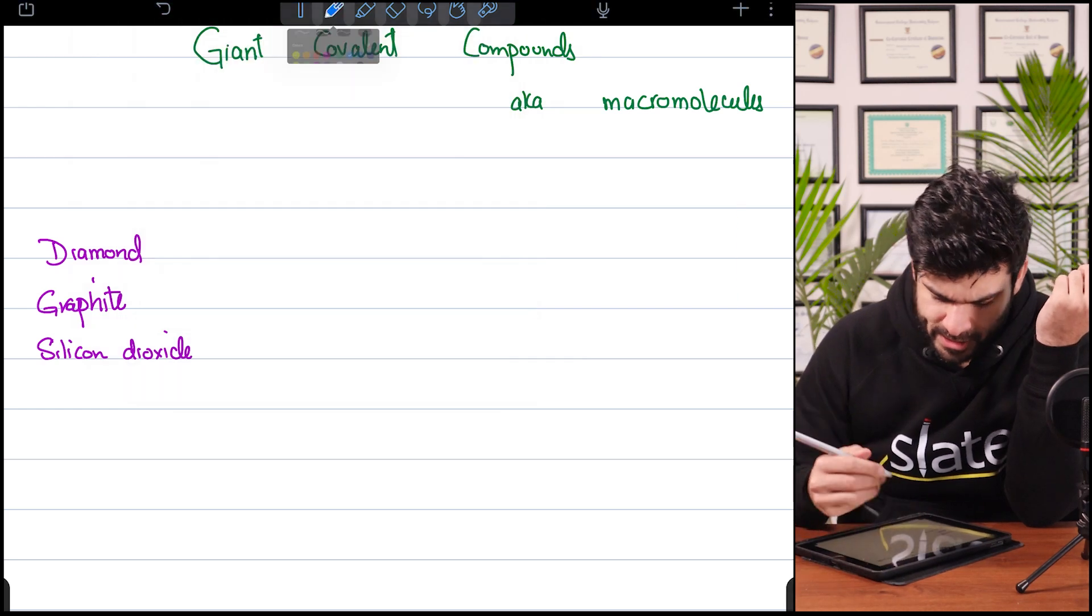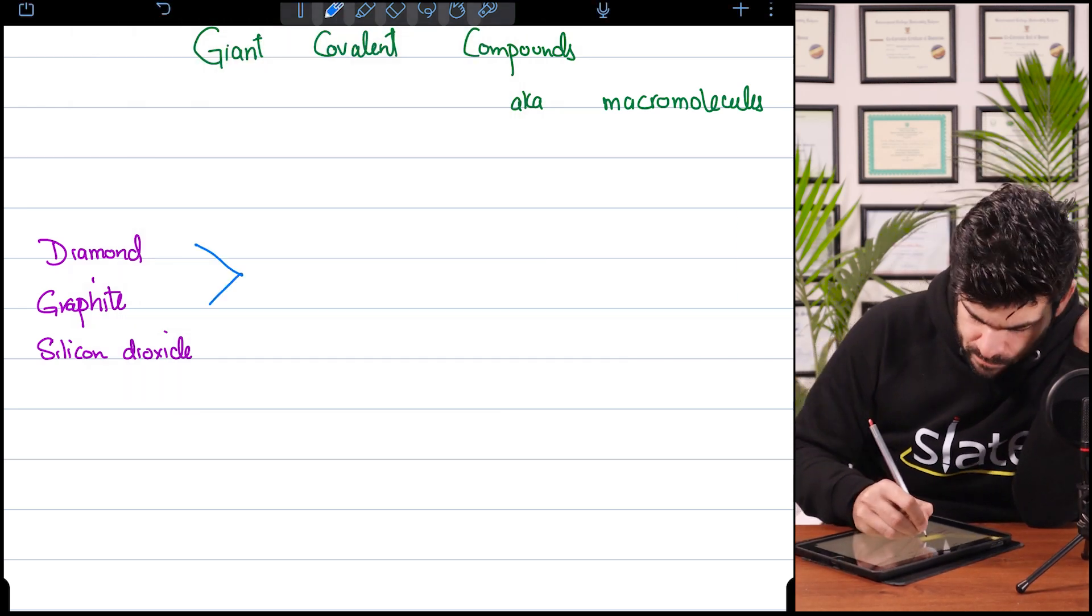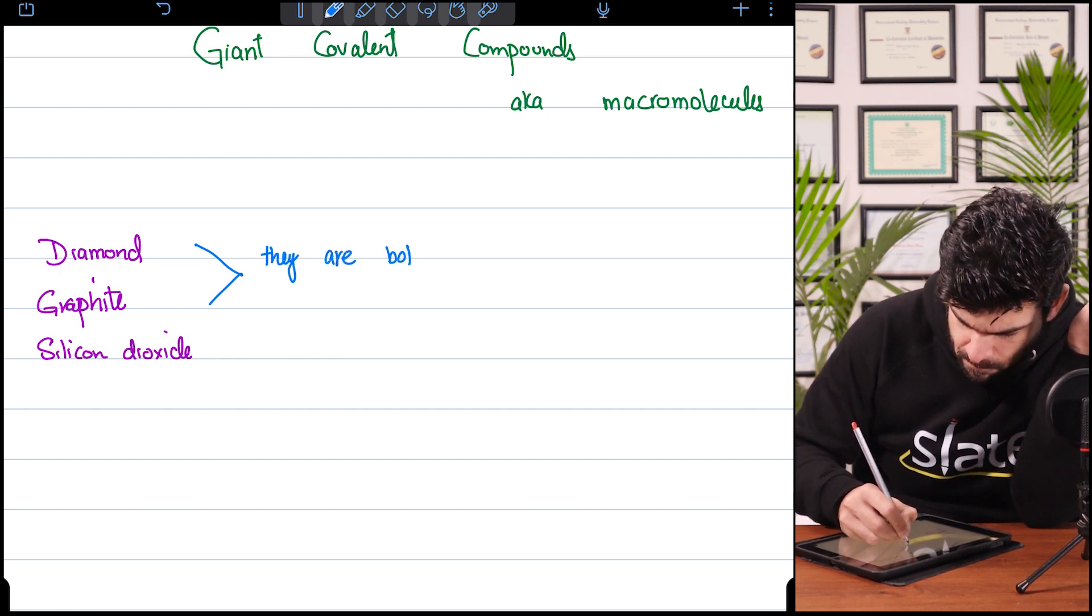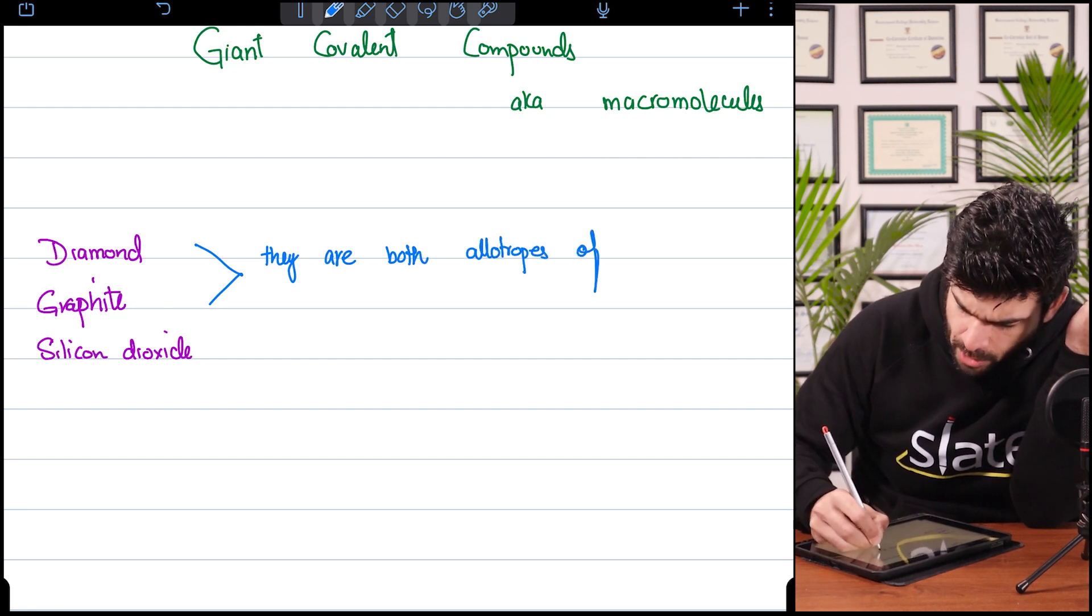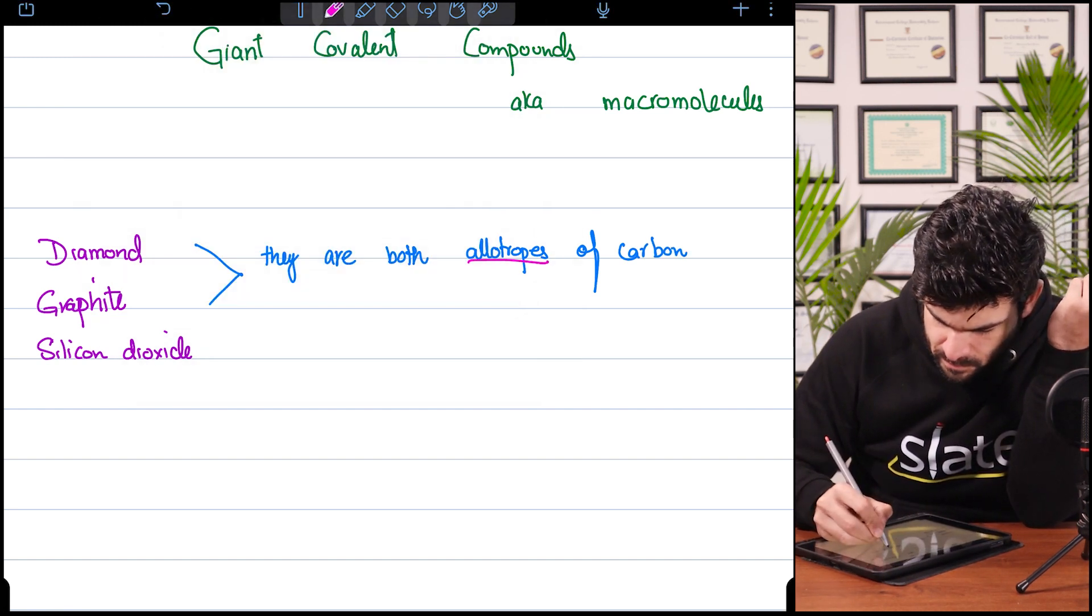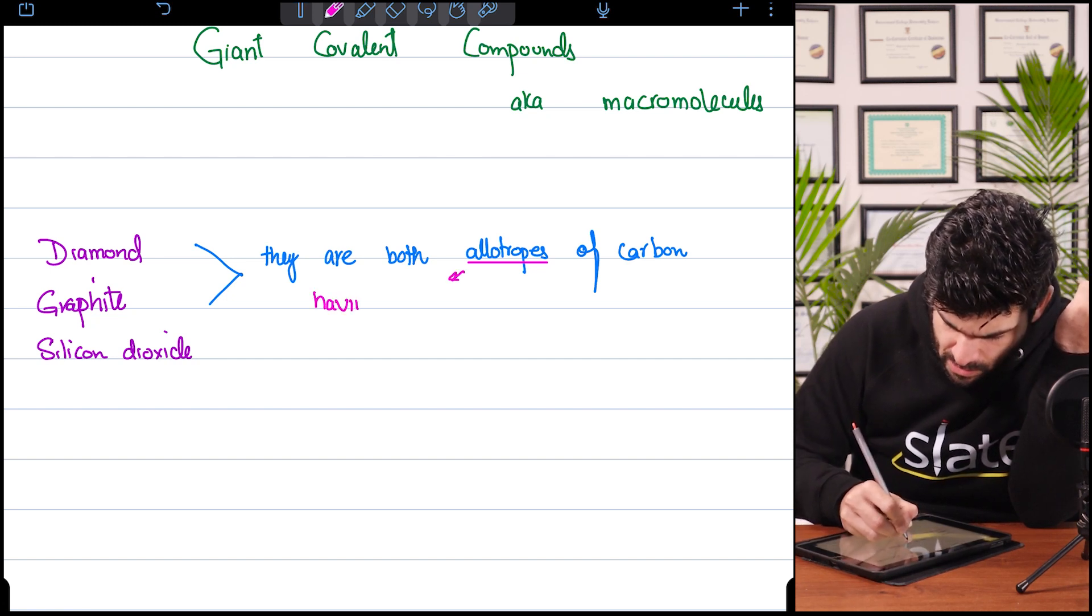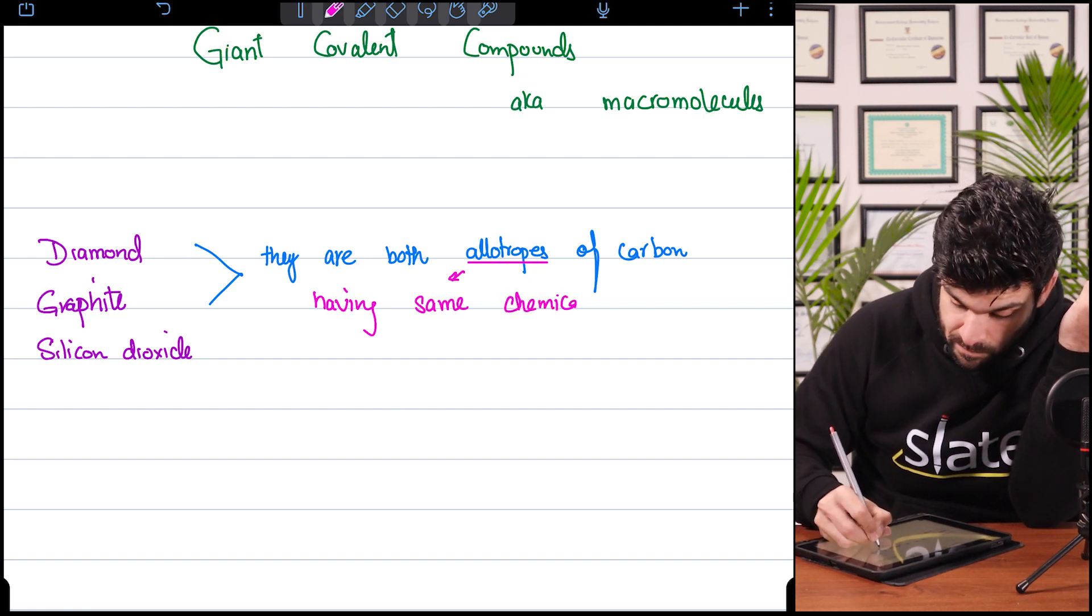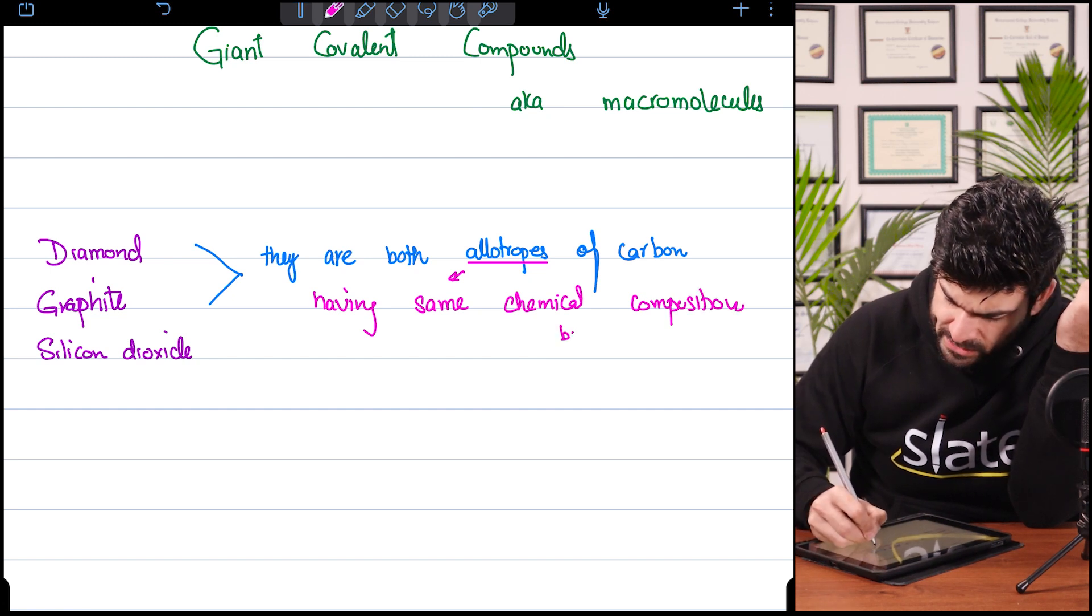Diamond and graphite are both allotropes of carbon. What do we mean by allotropes? Having the same chemical composition but different structural arrangement or geometry.